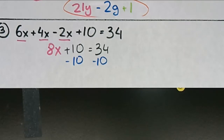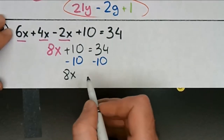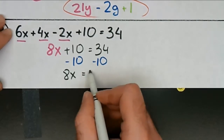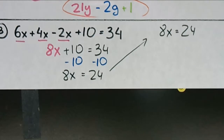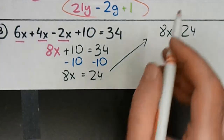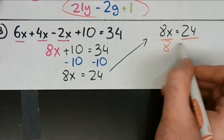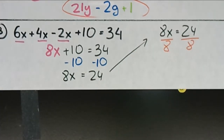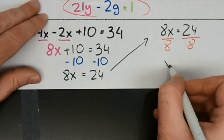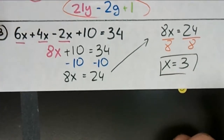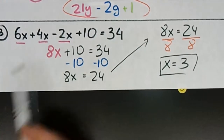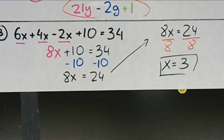When you do that you end up with 8x on the left side and 24 on the right side. Now what's our last step? Divide both sides by 8 — we're multiplying by 8 here, so the opposite is to divide. 24 divided by 8 is 3. You can check your solution by plugging this 3 in for the x's and it should work out. Questions on three?